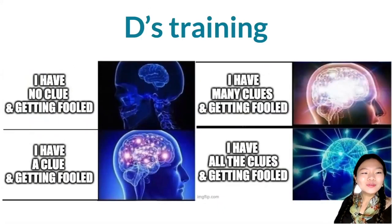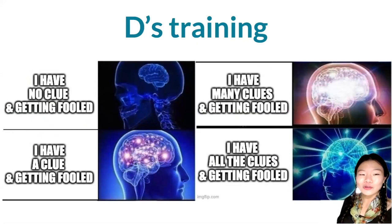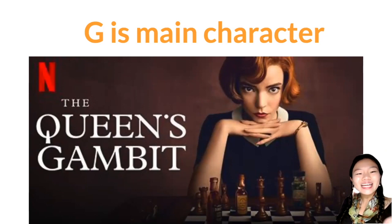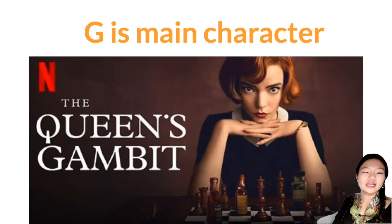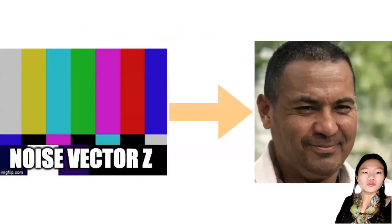Realistically, the discriminator's job will look like starting with no clue and getting fooled every now and then, then having a clue but still getting fooled, then having many clues but still getting fooled, and having all the clues and still getting fooled. You want to keep the discriminator on its toes. The reason is that the generator is the main character, the protagonist of the story — just like in Queen's Gambit — and we want to train it to an amazing state, because ultimately we want to generate these images from those noise vectors.